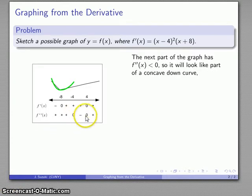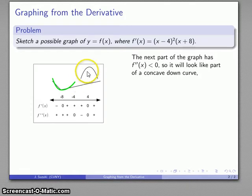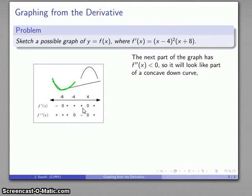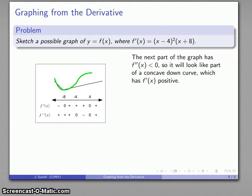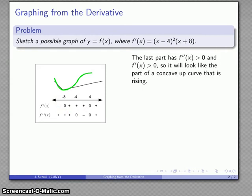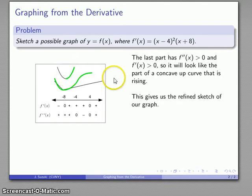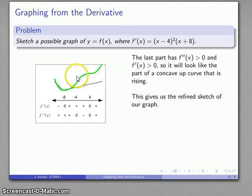In the next part, the second derivative is negative, so the graph is concave down. A concave down curve has a rising part, a flat part, and a falling part — the first derivative tells us which. With second derivative negative and first derivative positive, we're on the rising part of the concave down curve. I'll clip and move that section. Finally, in the last interval, the graph is concave up with a positive derivative, so I clip and move that rising concave up section. The refined sketch shows the graph falling for a while, then rising, with a couple of small inflection bobbles along the way.